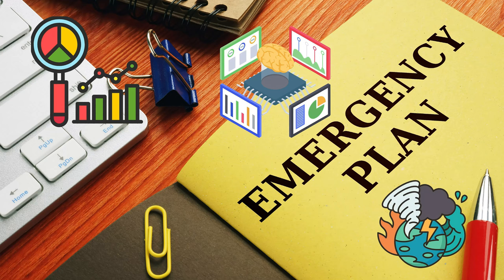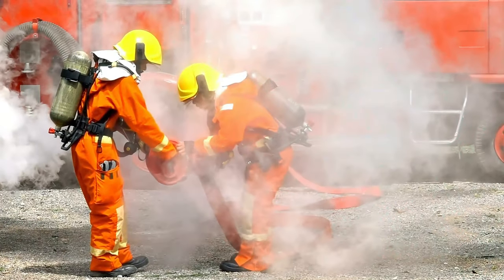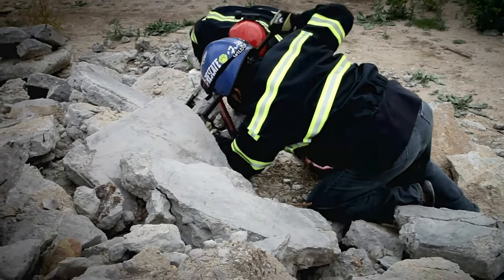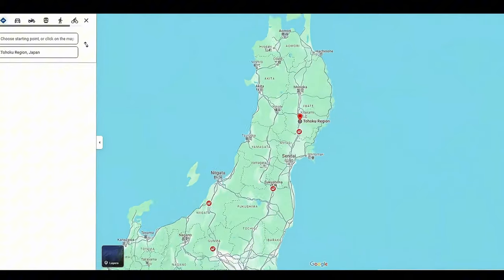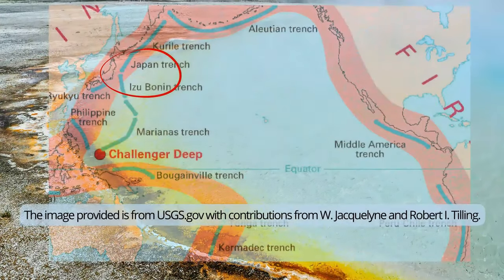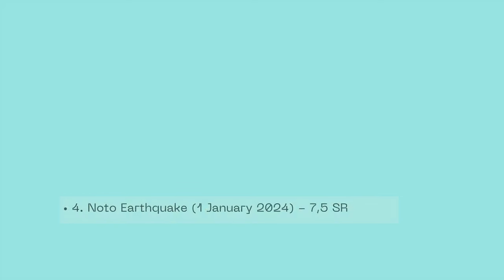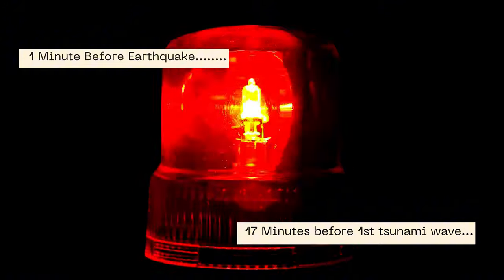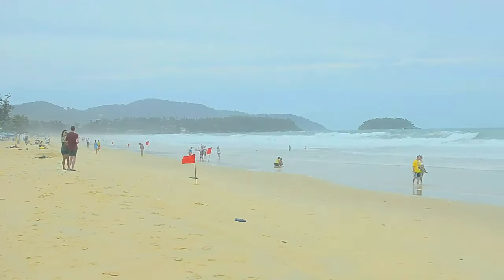Lastly, communities must have the capacity to respond efficiently to warnings, including having emergency response plans, regular training, and well-maintained infrastructure. Japan is known for successfully implementing an early warning system. On March 11, 2011, the Tohoku region was hit by a powerful earthquake measuring 9.1 on the Richter scale, along with a tsunami reaching heights of 130 feet originating from the Pacific Ocean's Ring of Fire — the strongest earthquake in Japan and the fourth strongest globally. The EWS sent alerts one minute before the earthquake and 17 minutes before the initial tsunami wave, allowing many individuals to evacuate to safer areas.